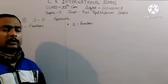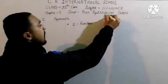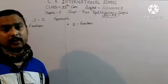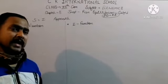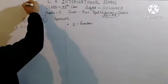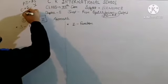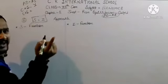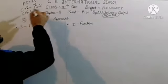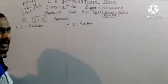In yesterday's video we covered the first approach to find equilibrium output, which is the AD/AS approach. Today we look at the second approach: the S&I approach - the Saving and Investment approach. AS is the level of income, and AD components are C plus I.